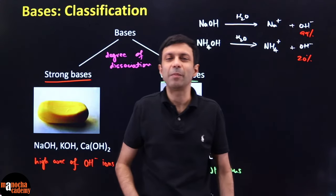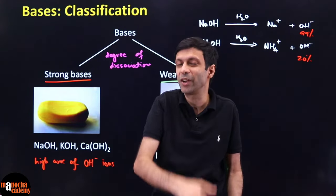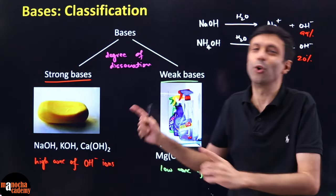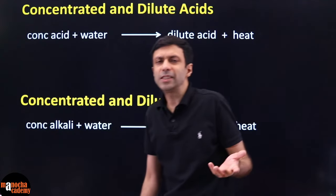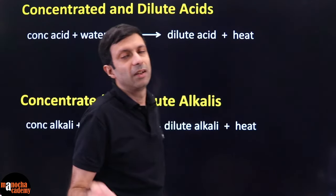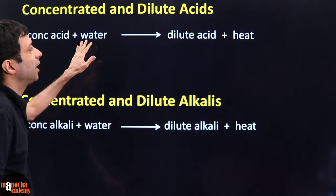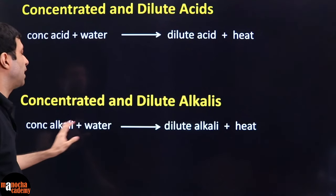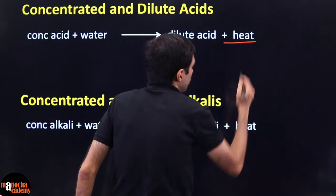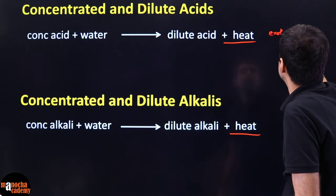Exam tip: whenever they ask why an acid or base is strong or weak, the answer is degree of dissociation. For strong acids write: high concentration of hydronium ions (H3O⁺). For weak acids: low concentration. For strong alkalis: high concentration of hydroxyl ions (OH⁻). For weak bases: low concentration. Now, what is the meaning of concentrated and dilute? Dilute means less acid more water; concentrated means more acid less water.